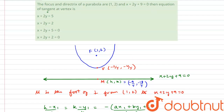Now what we need to find is the tangent at this vertex. The tangent of the parabola at vertex V is parallel to the directrix. Since it is parallel to the directrix, the x and y coefficients of the tangent line are the same as those of the directrix. So the tangent is of the form x + 2y + c = 0 for some constant c. We can find c by substituting the vertex into this equation, since V lies on the tangent.